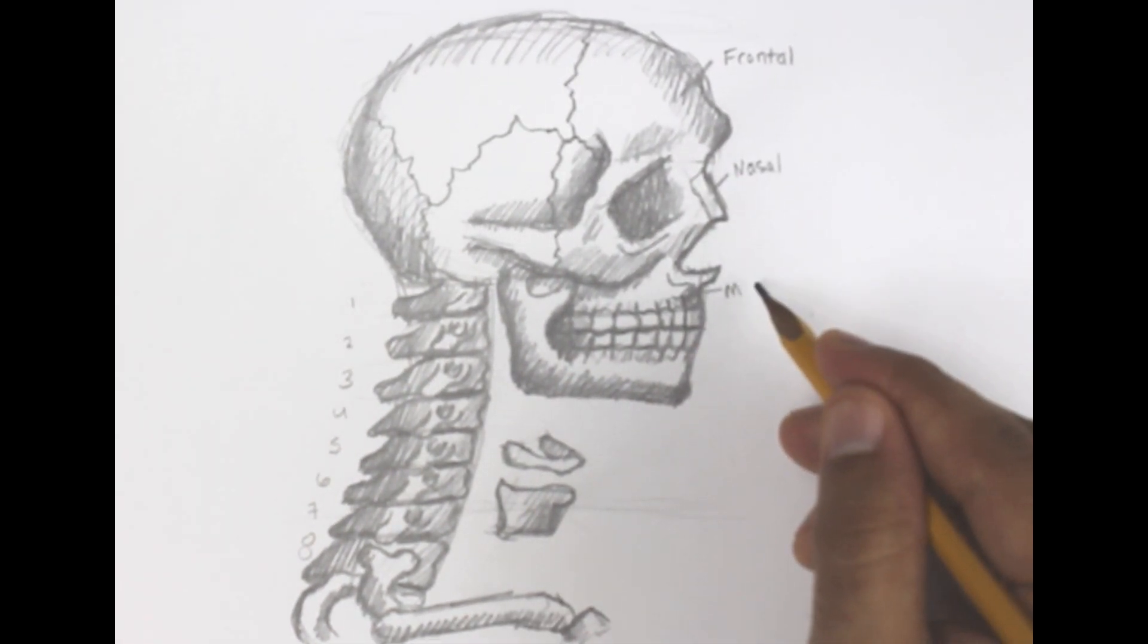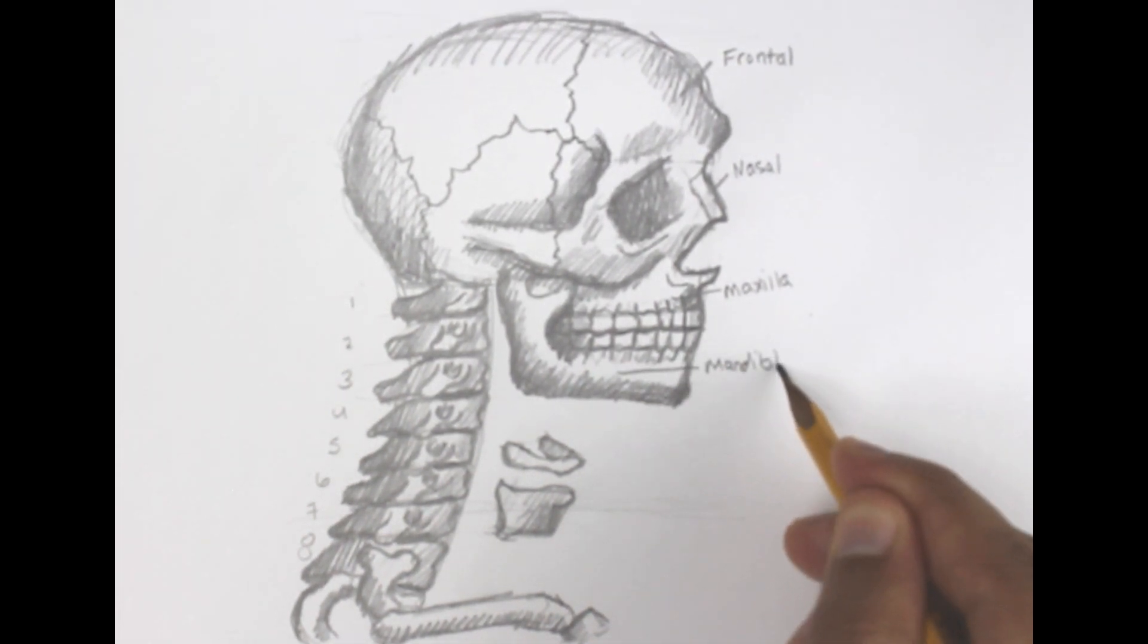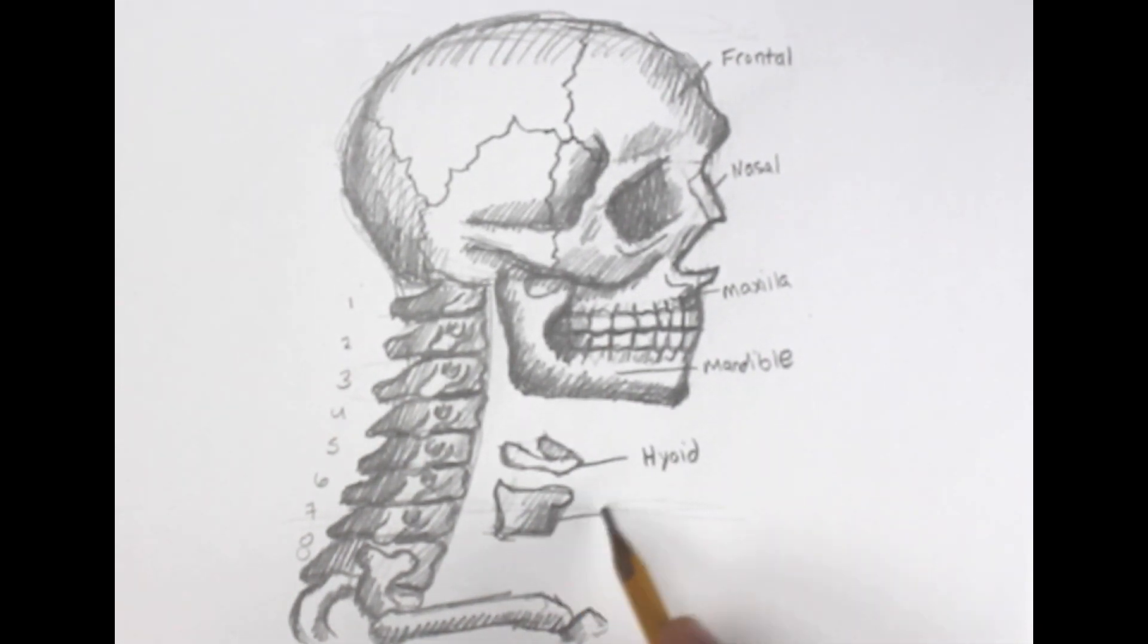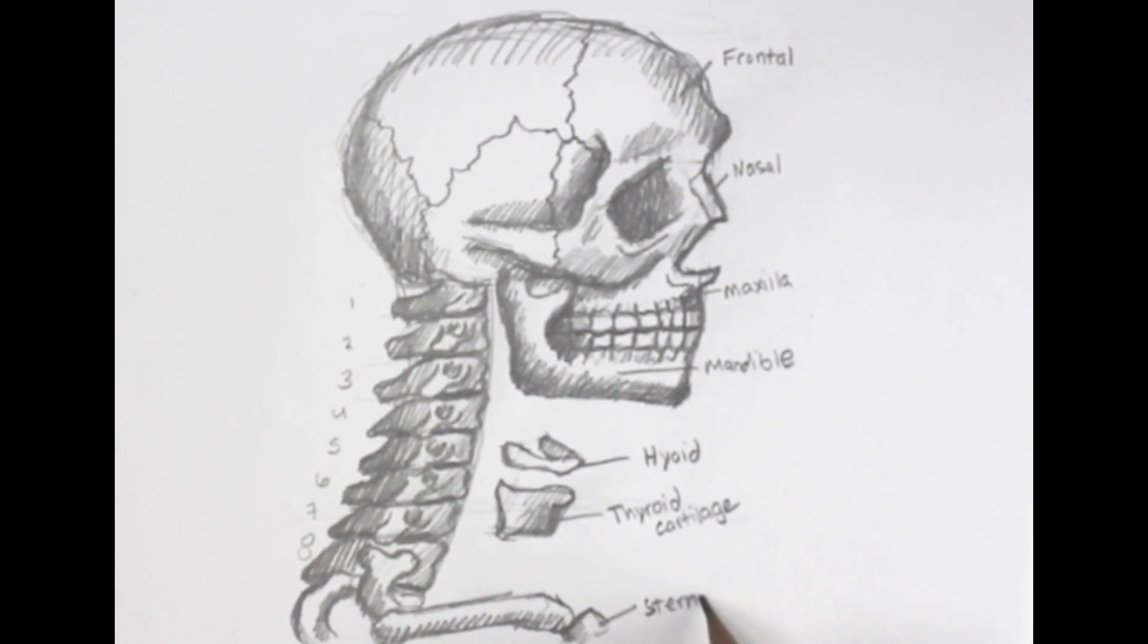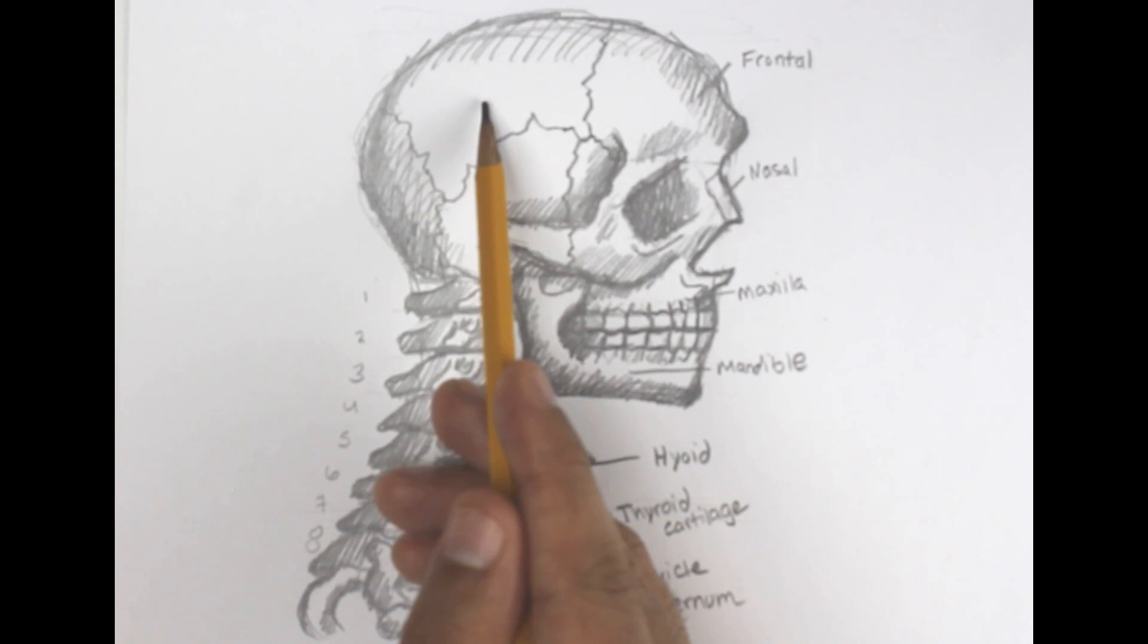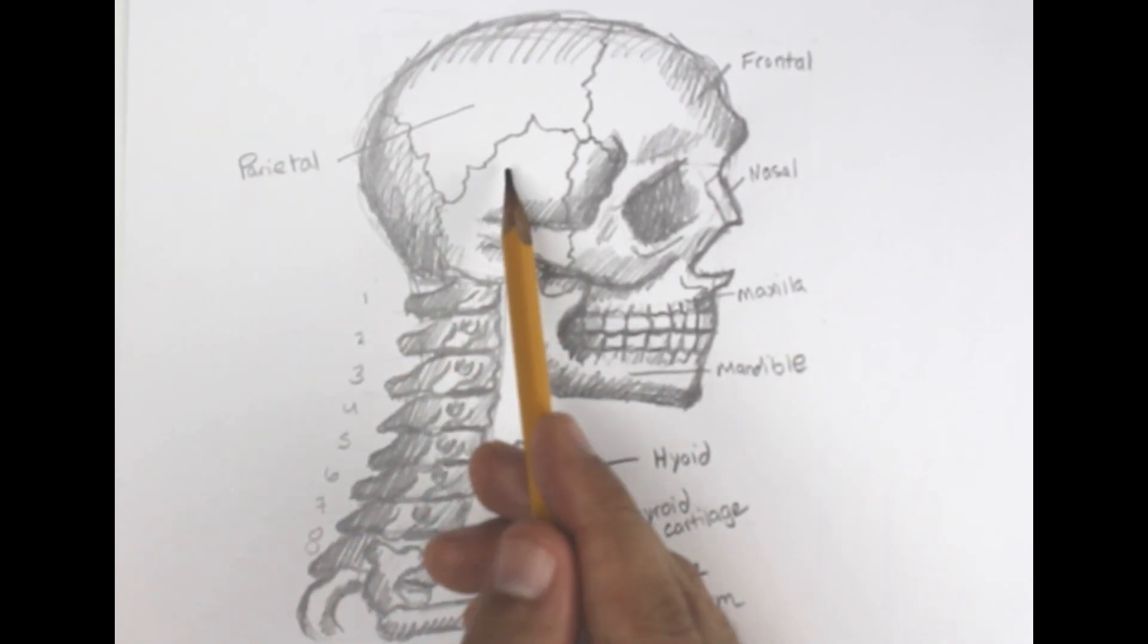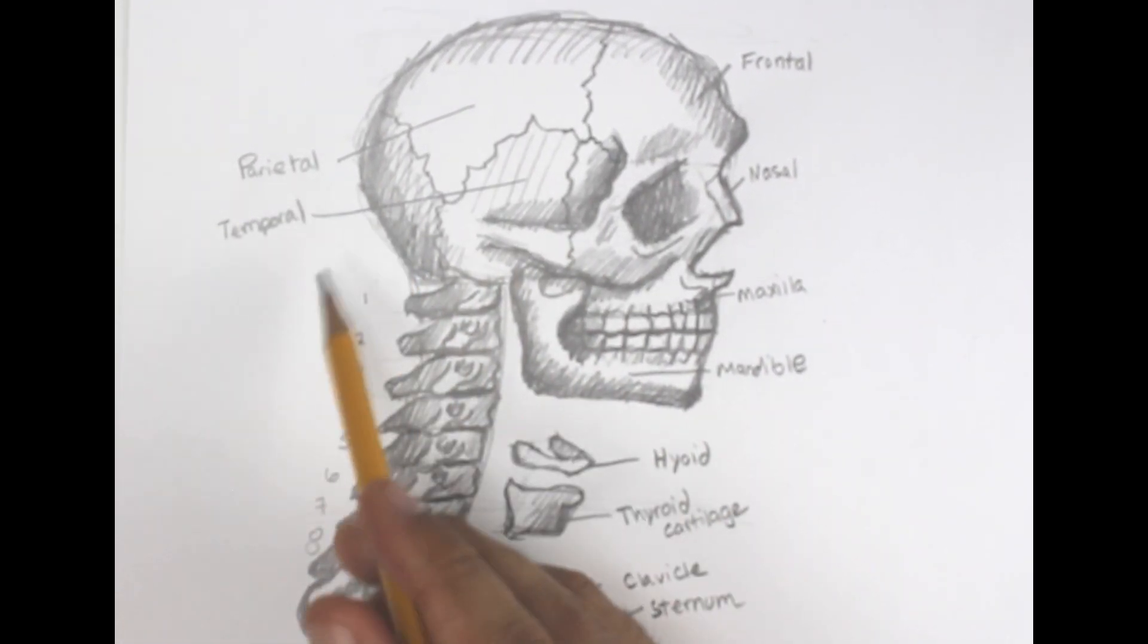Once you've labeled the drawing, you're done. There's a few more labels on this one than there were on the frontal view, just because there's more that you can actually see. It's not that much more, but there is maybe like three or four more. Make sure you get all of those labels in and try to spell them correctly. I know it may be difficult to understand my writing.